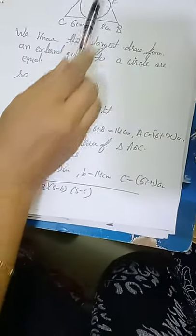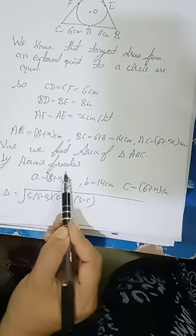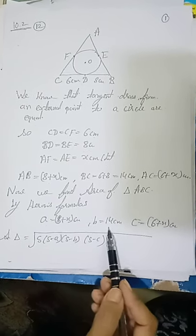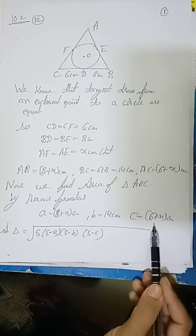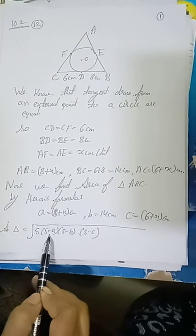We find the area of triangle ABC two ways. First way, we find area of triangle by Heron's formula. Side A is 8 plus x, side B is 14 cm, and side C is 6 plus x cm. So we find area of triangle ABC by Heron's formula.